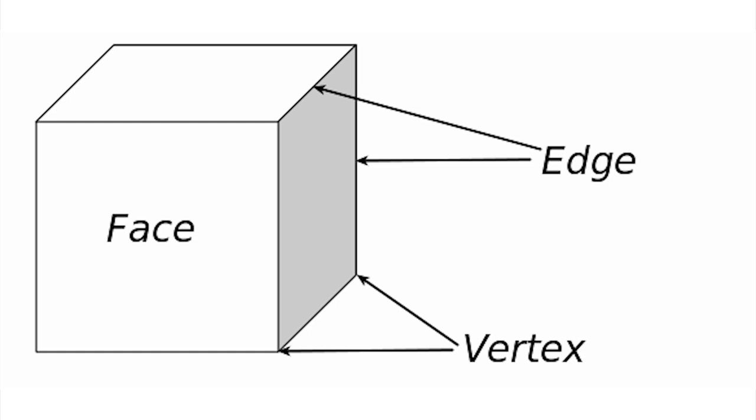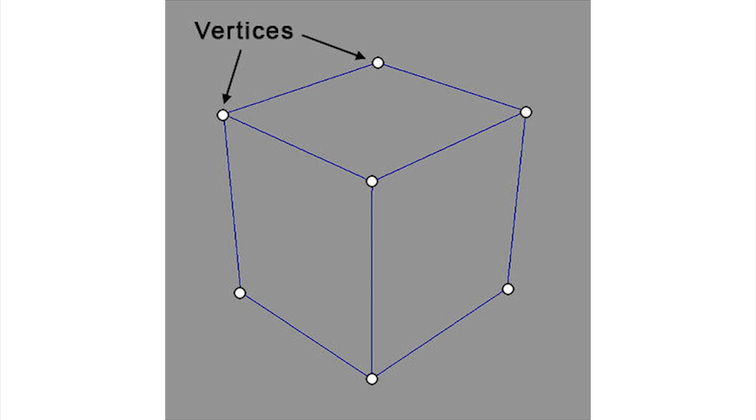Polygonal models are made up of vertices, edges, and faces. Vertices. These are points in 3D space. Each of these points is known as a vertex.